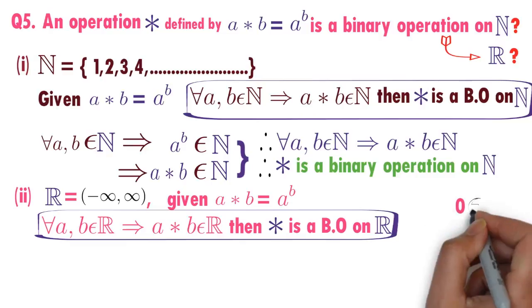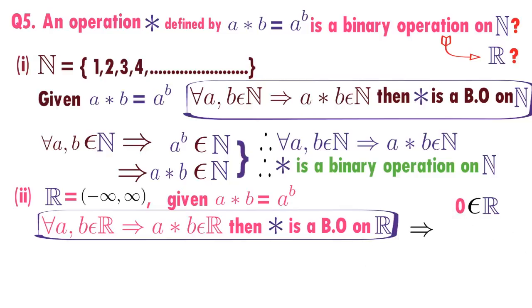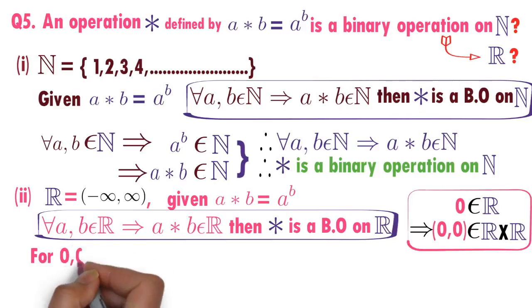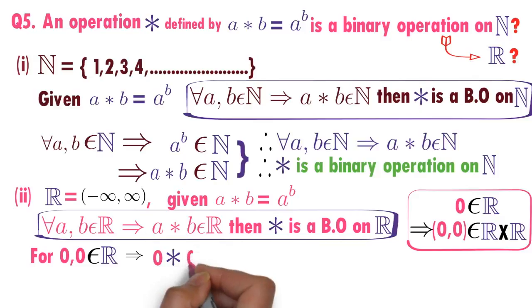See, it's clear that 0 is a real number. Yes, 0 is a real number. As we know Cartesian product of sets, 0 comma 0 ordered pair definitely belongs to R cross R. It is an important point here. Now I will take a pair of two real numbers, values 0 comma 0. Both are real numbers.